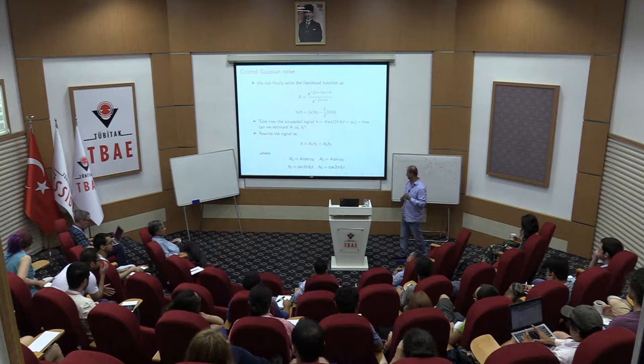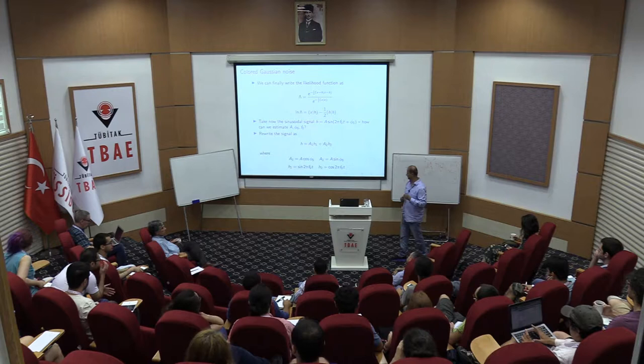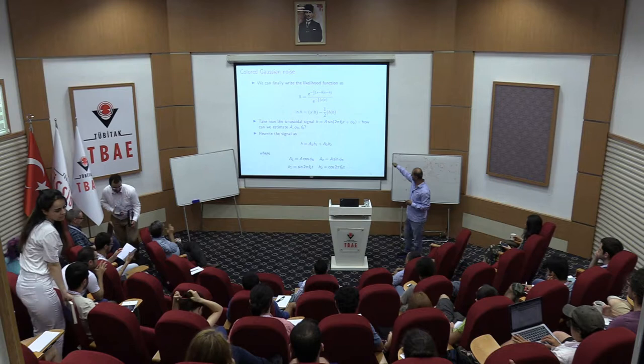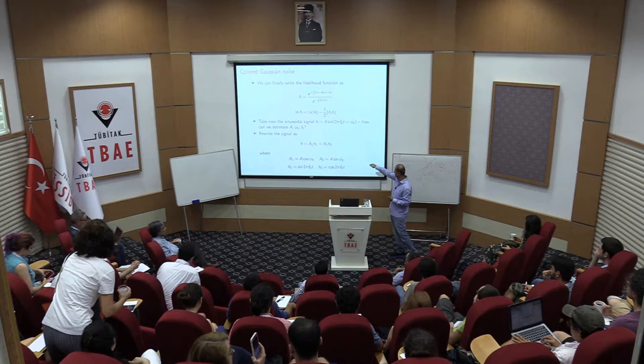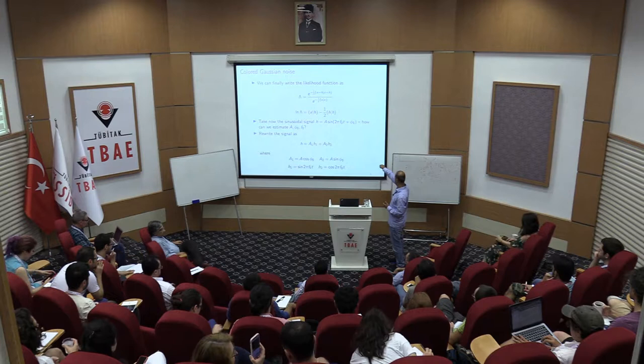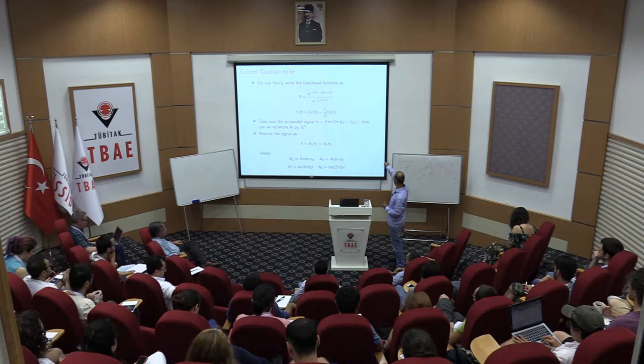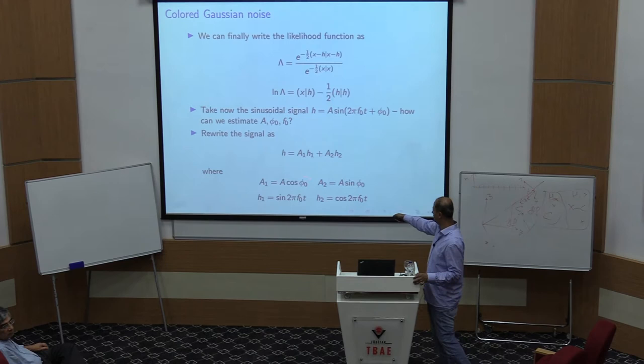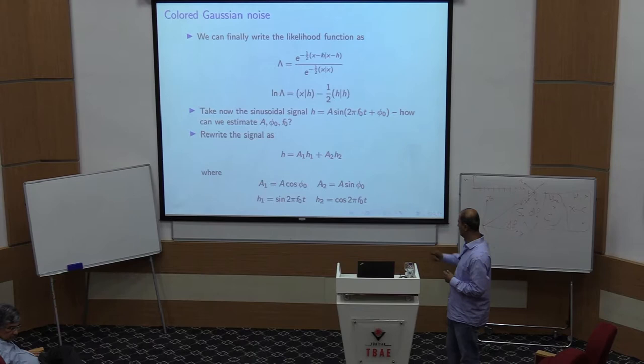To help do this, let's use a little trick. We have the signal in this form, and if we expand the sine, we can write the signal as a1 times h1 plus a2 times h2, where a1 and a2 are combinations of the amplitude and initial phase, and h1 and h2 are just the sine and cosine of 2π f0 times t.